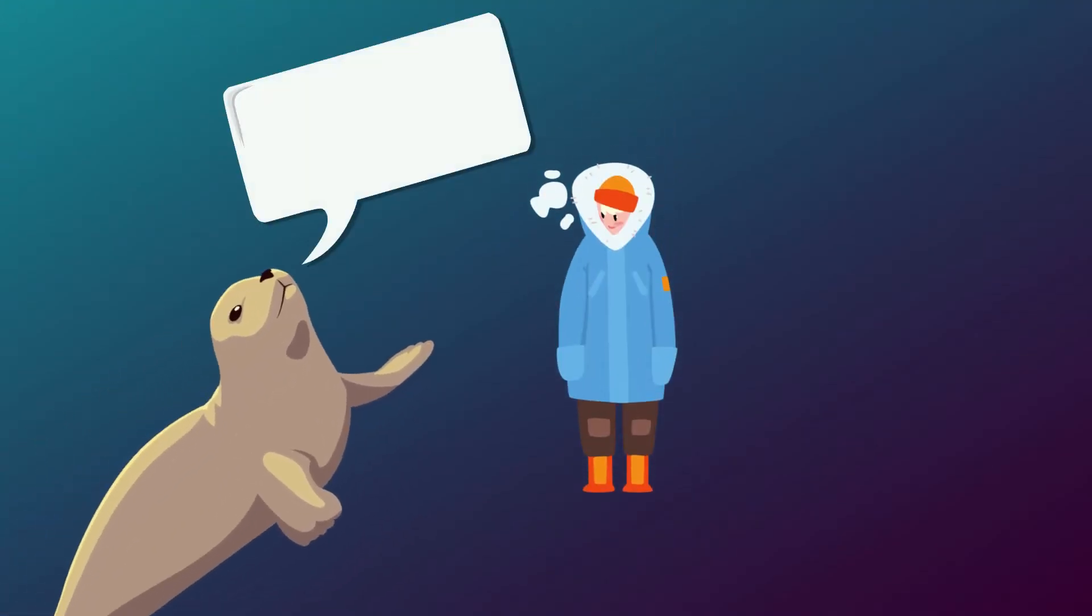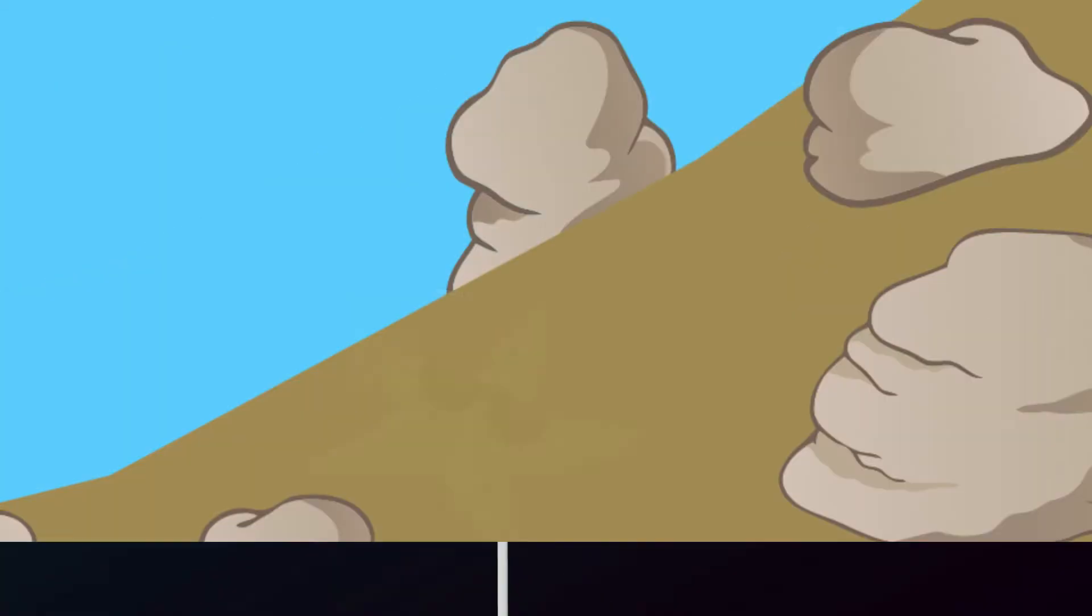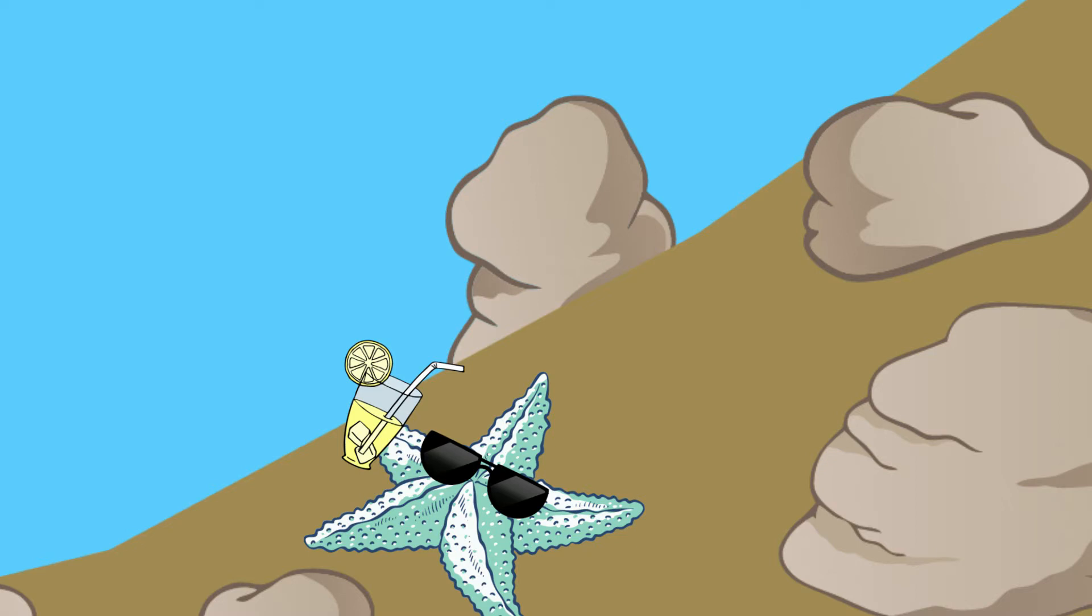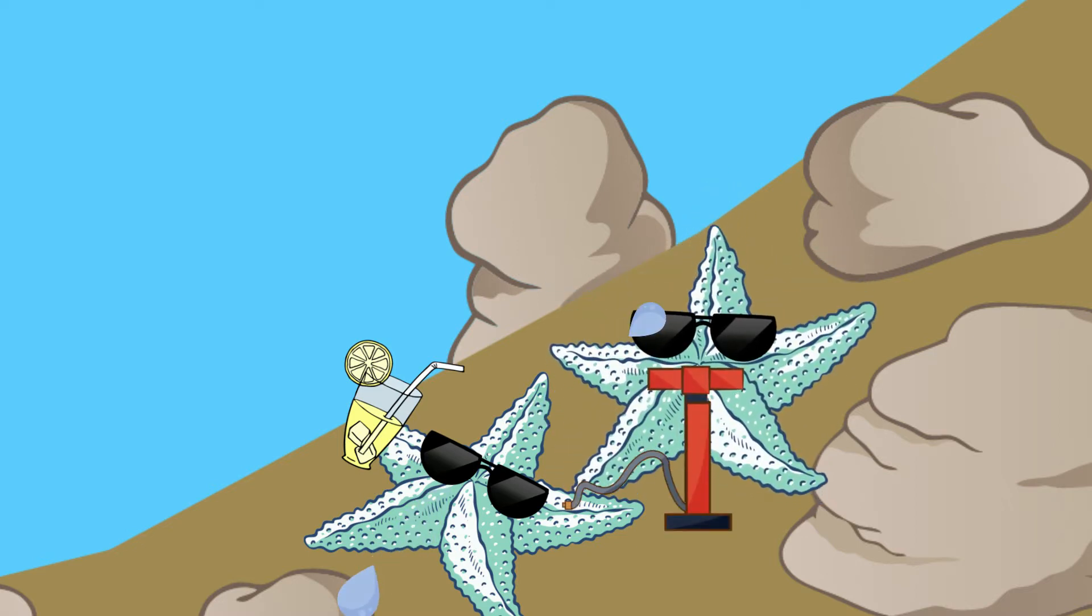To keep warm in the cold water, sea lions and other mammals have layers of blubber that act like a nice big snowsuit. Some sea stars are able to keep cool in the sun by pumping cold water through their bodies.